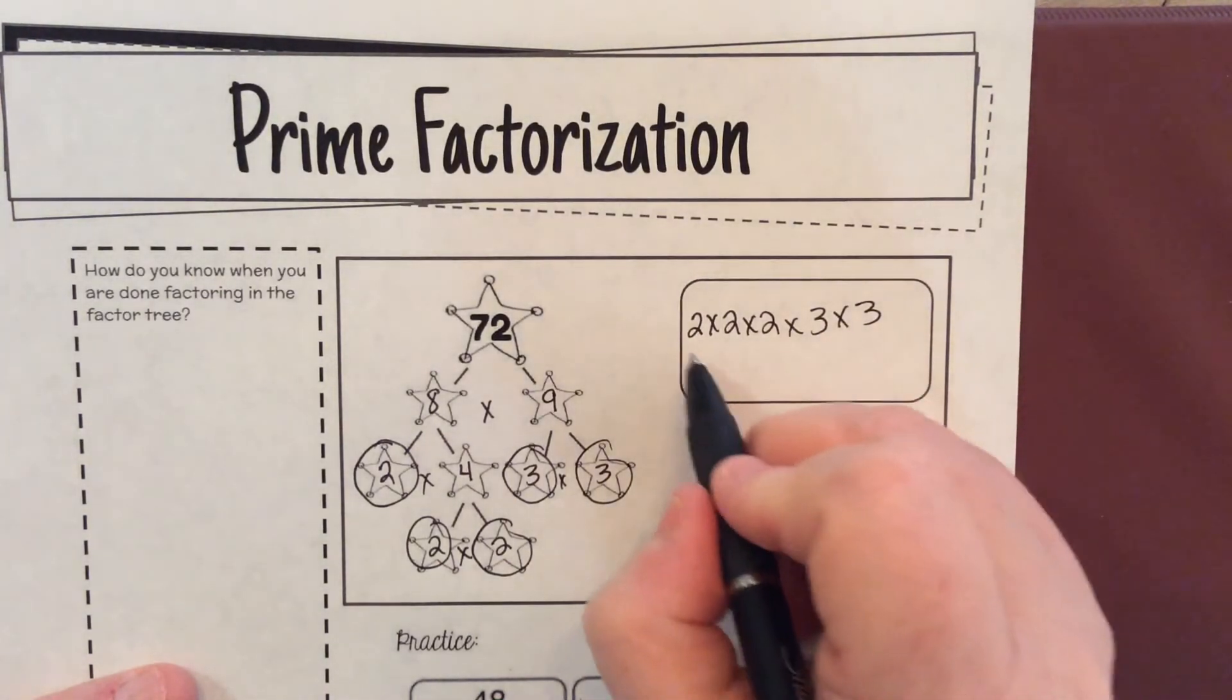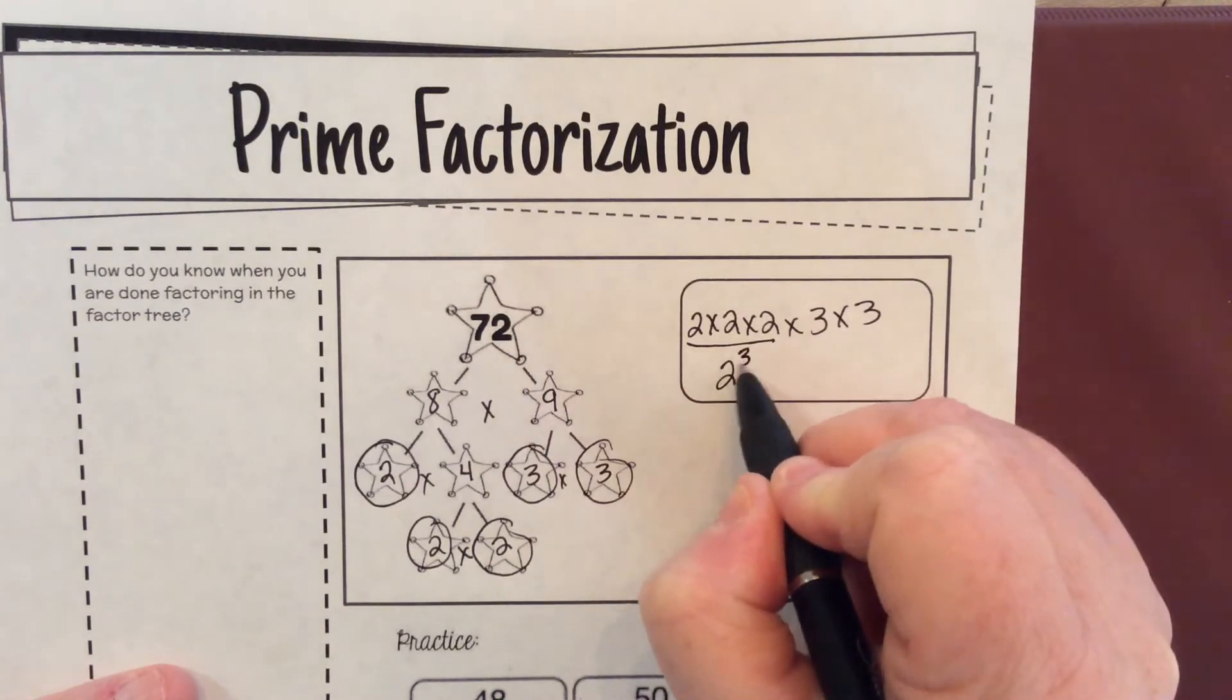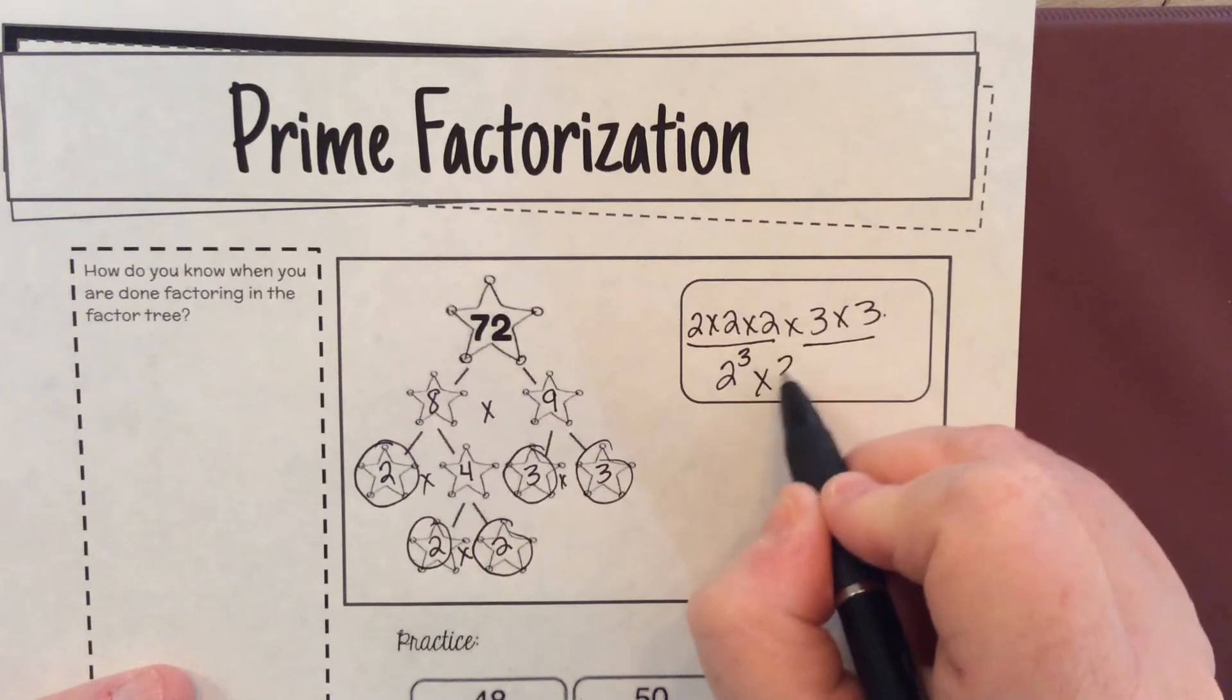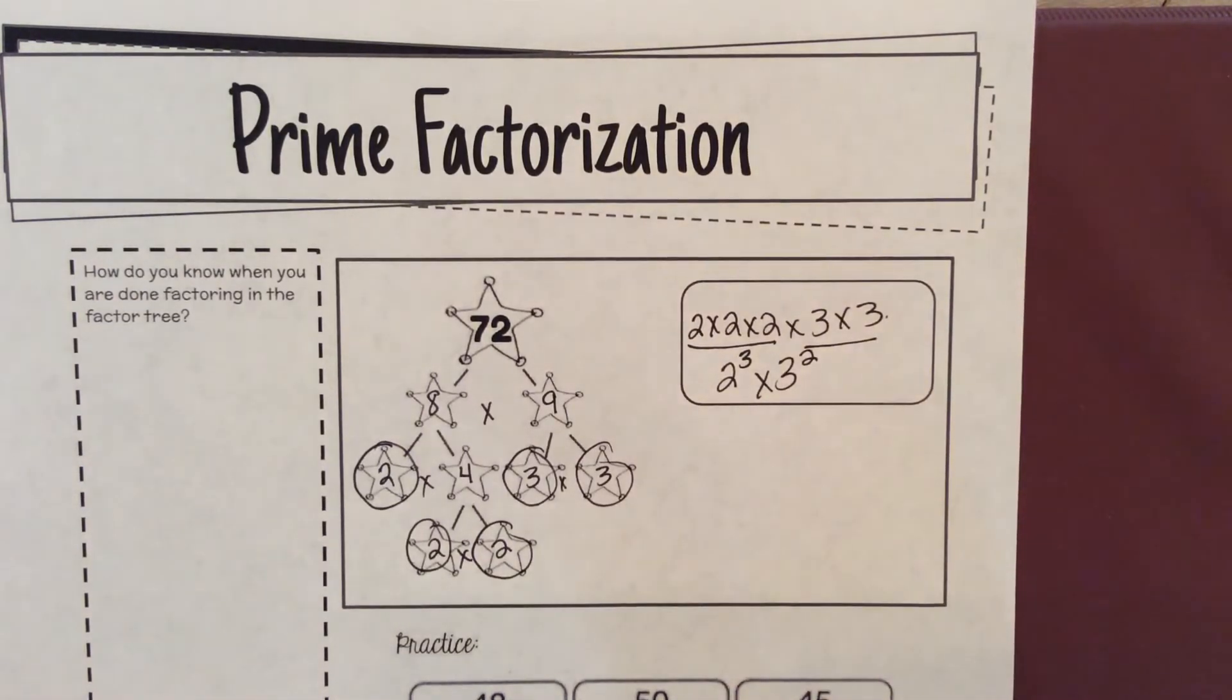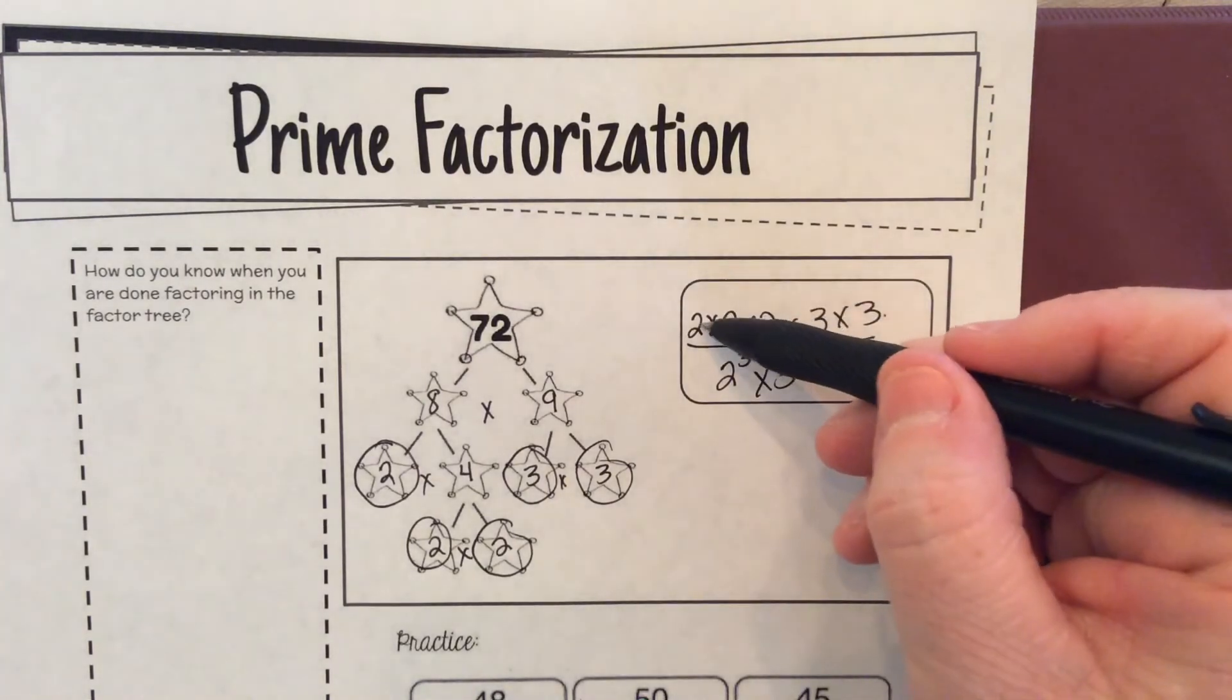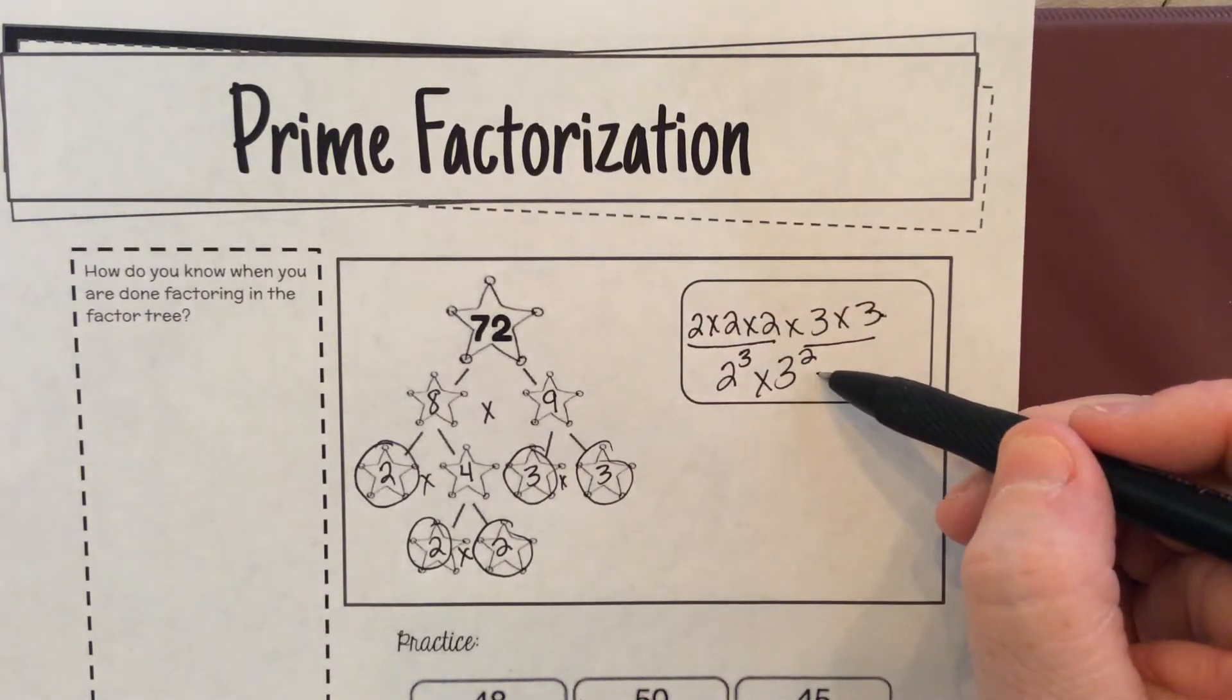Two times two times two times three times three. Now there are three twos, so I'm going to write two to the third power times, and then there are two threes, I'm going to write three to the second power. So the only difference between the fifth grade level of this and the sixth grade level is that in fifth grade we write it with no exponents, and now in sixth grade we write it with exponents. We write it one step farther.